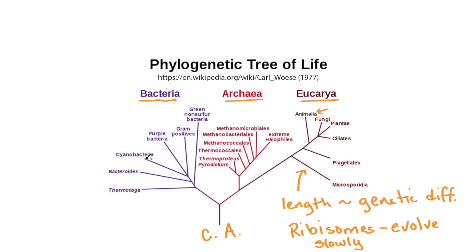You can look at the ribosome of an archaea on one branch and compare it to a cyanobacterium on another branch, and the genetic code is similar enough to make that comparison. If the genetic code is too different, the comparisons break down. So looking at ribosomal RNA allows us to examine these really large-scale evolutionary relationships.